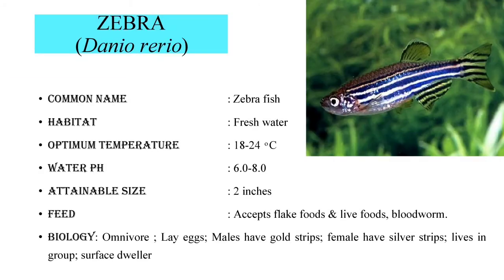The ornamental fish which looks most colourful is the Zebra fish, which is scientifically called Danio rerio. The common name is Zebra fish. It also lives in freshwater habitat. The temperature suitable for this fish to survive is 18 to 24 degrees C and the water pH should be between 6.0 to 8.0. During its lifespan, it attains a maximum size of 2 inches. This fish feeds on live foods, bloodworms, flake foods etc. The fish is an omnivore and it lays eggs. The male has gold stripes and the female has silver stripes. It lives in groups.